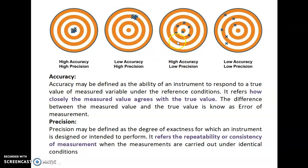The third case shows high accuracy — it is on the target, so it is highly accurate — but low precision, because the instrument does not give the same reading again and again. The fourth case is low precise and low accurate: it is not on the target, so low accuracy, and the instrument does not give the same reading, so it is low precise.